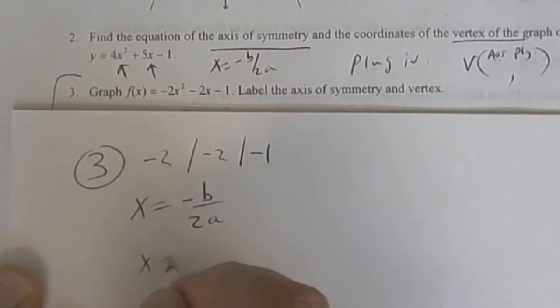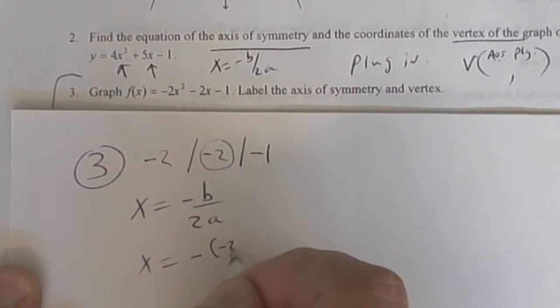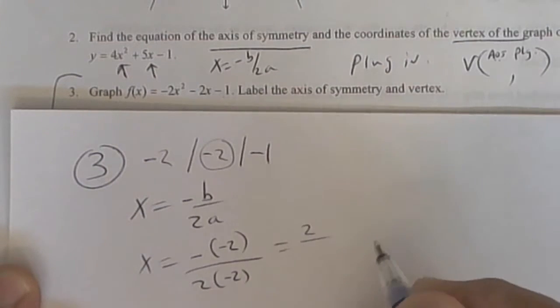So now you're going to have x equals a negative, but b is already a negative, Amy, so you're going to have a double negative over 2 times a. So that's going to be a positive 2 over a negative 4.